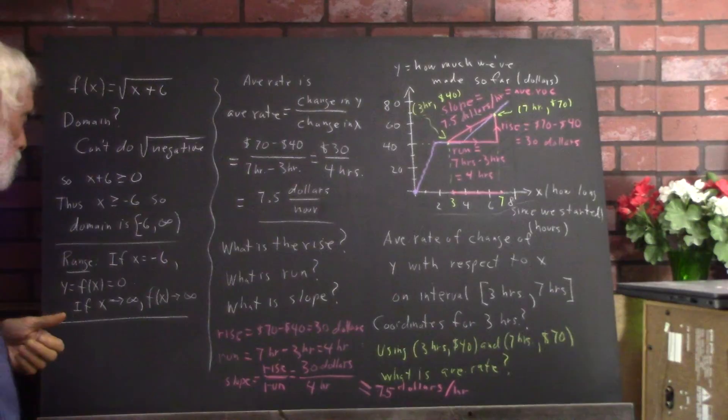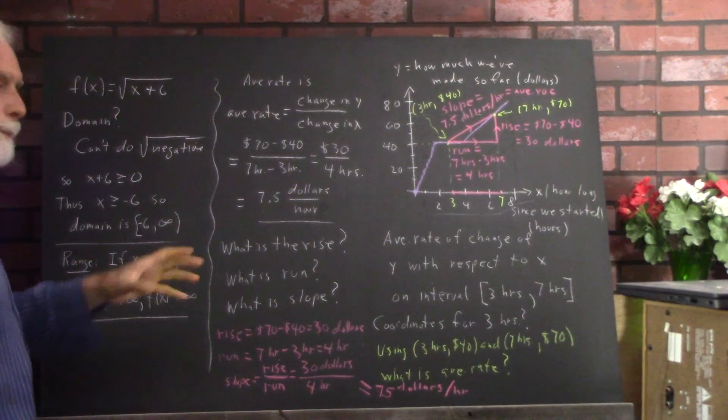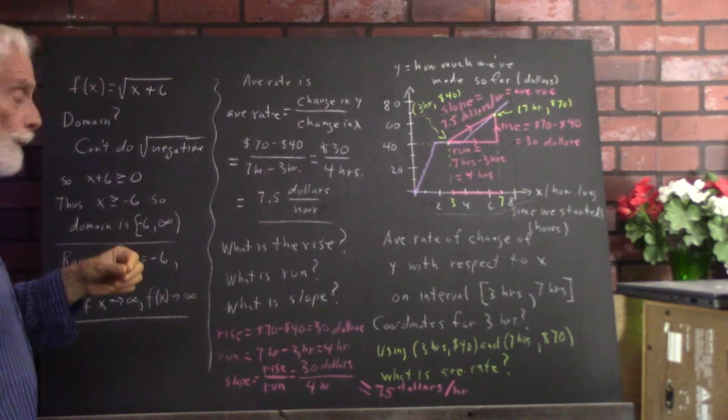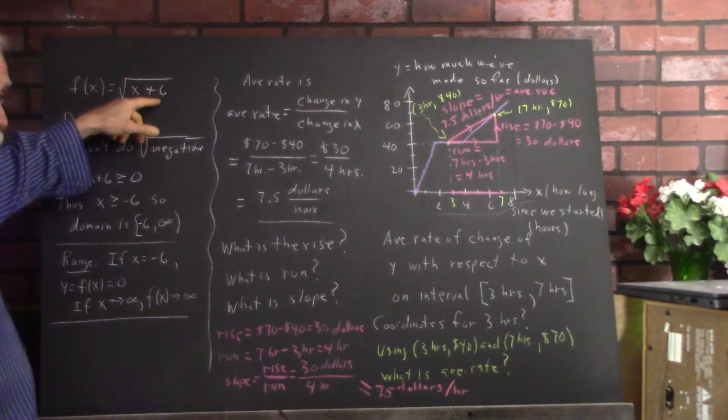Specifically, if you want to prove that some number is in the range, you say, okay, let's just take that number. I want square root of x plus 6 to equal that number.